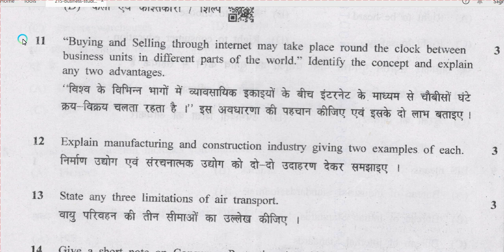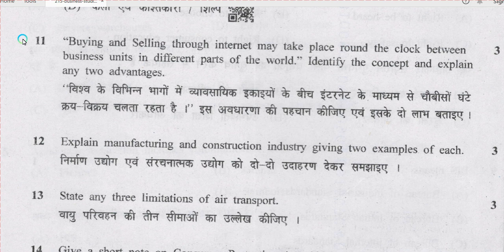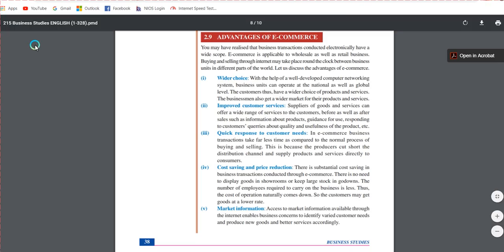Students, from question number 11 onwards there are questions for which you have to write the answer. Question number 11: buying and selling through internet may take place round the clock between business units in different parts of the world — identify the concept. The concept is e-commerce, that is electronic commerce. Explain any two advantages; chapter number 2, page number 38 lists five advantages of e-commerce and you can write any two.